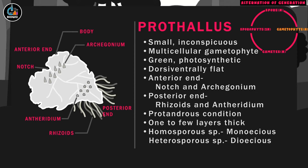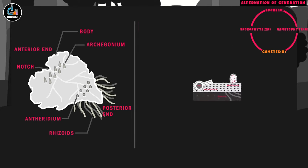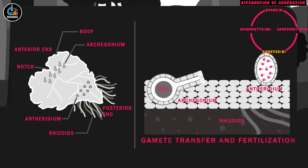But in heterosporous species, separate male and female gametophytes are produced, bearing antheridium and archegonium respectively. In monoecious prothallus, the antheridium and archegonium mature at different times to avoid self-fertilization. The antheridium produces long, motile and spirally coiled male gametes called antherozoids.